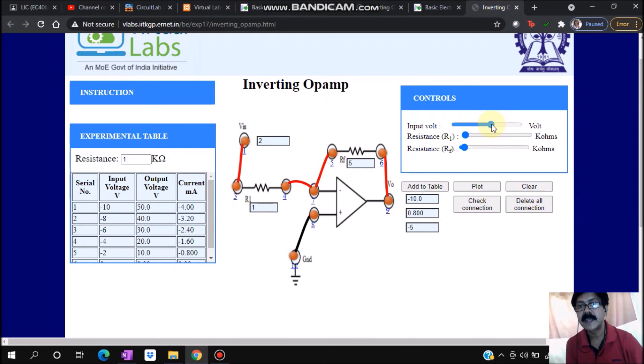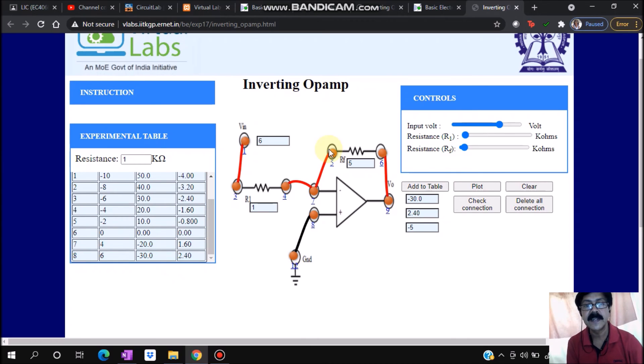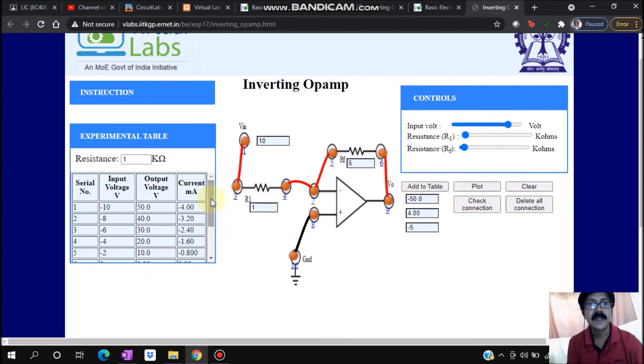Similarly, in the positive side I can take plus 2 volts, and I'm getting this value. Then for 4 millivolts, what is the output? For 6 millivolts, what is the output? You can see here I'm getting the results. Similarly for 8, add to table, and then for 10. So we are varying from minus 10 to 10.